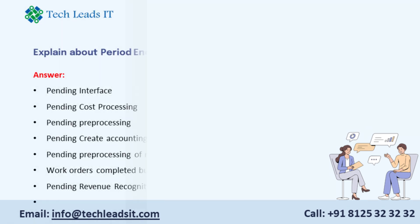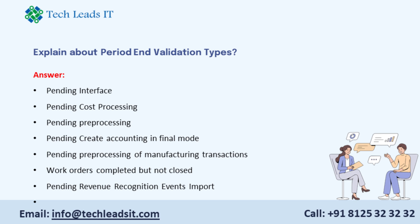Explain about period end validation types. The validation types include: pending interface, pending cost processing, pending pre-processing, pending create accounting in final mode, pending pre-processing of manufacturing transactions, work orders completed but not closed, pending revenue recognition events import.